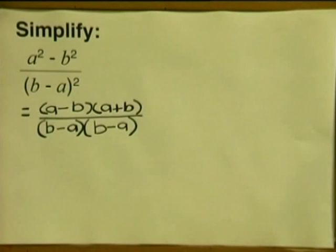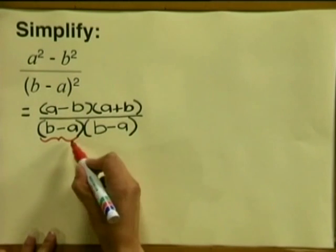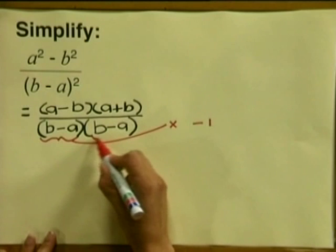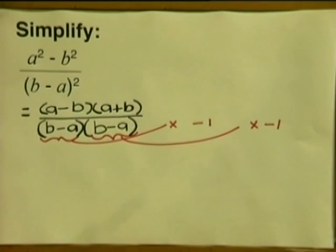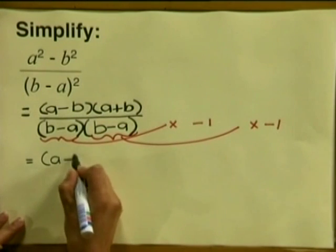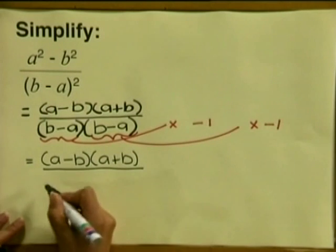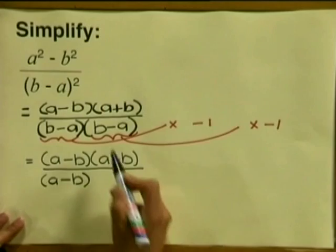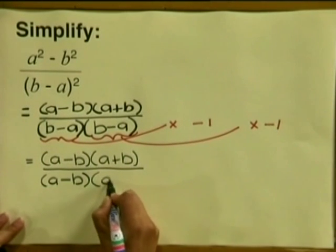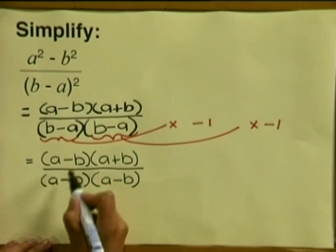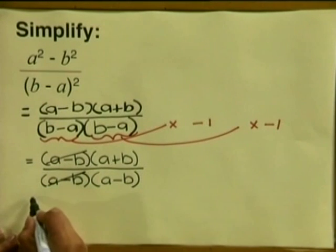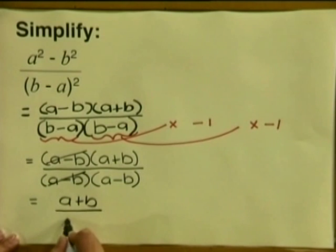So far so good. Now let's see what else we can do — can we cancel? Do you see any common factors in the numerator and the denominator? Not really. But do you see that we can change the sign here? So I'm going to multiply each factor in the denominator by minus 1 twice — multiplying b minus a by minus 1 gives us a minus b, and similarly for the second bracket. Now we can cancel the a minus b factors, and we are left with a plus b divided by a minus b. And this is our final answer.